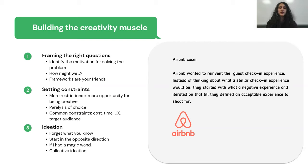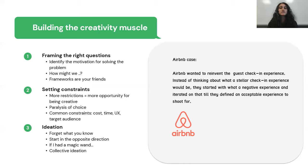One practice I recommend when collectively brainstorming is 'yes, and.' When someone expresses an idea, instead of immediately agreeing or disagreeing, encourage all participants to build on top of that idea. This is another form of setting constraints — the second idea is constrained by the first idea. You keep building one idea on top of each other in a related manner, so you generate a unique solution collectively that no one person could have thought of.